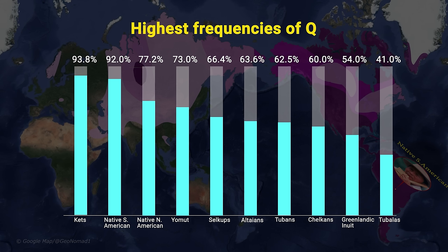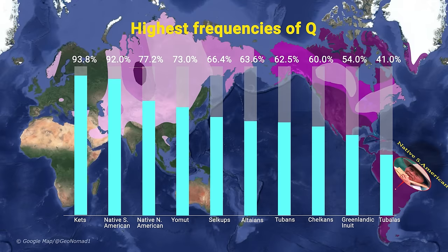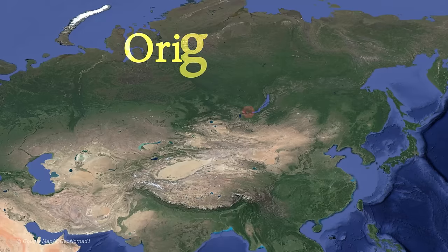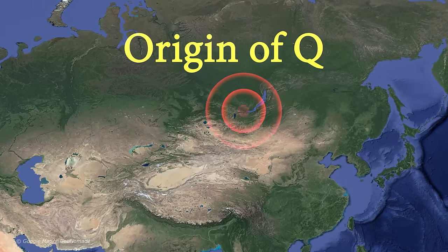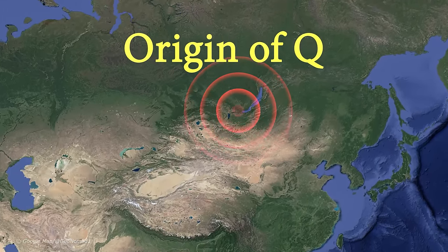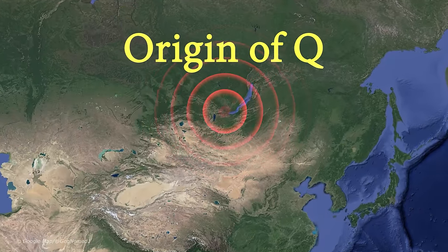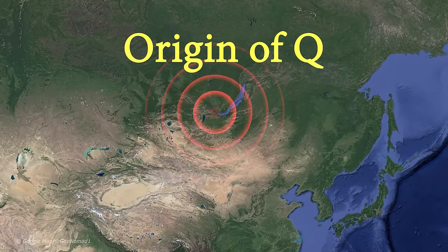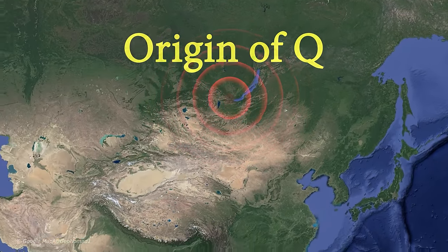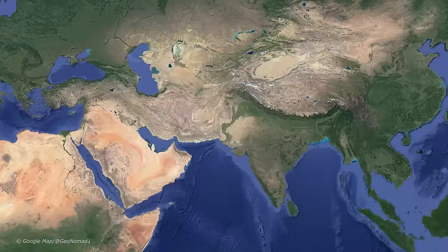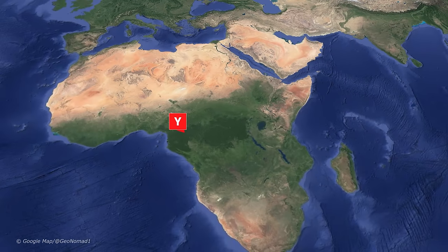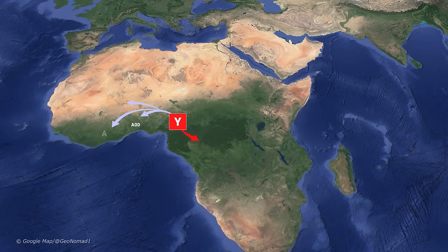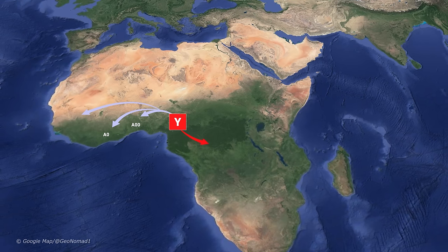In Europe, haplogroup Q is observed with low frequency only in some regions. Haplogroup Q is thought to have originated in Central Asia or North Asia near Lake Baikal around the time of the last glacial maximum. To help understand the origin and spread of Q, let's take a brief look at the migration process through Y-DNA tracing of modern humans from Africa.